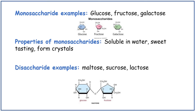Some examples of monosaccharides are glucose, fructose and galactose. The properties of monosaccharides are they are soluble in water, they're sweet tasting and they form crystals. Some examples of disaccharides are maltose, sucrose and lactose. Maltose is made up of 2 alpha glucose. Sucrose is made up of glucose and fructose. And lactose is made up of glucose and galactose.